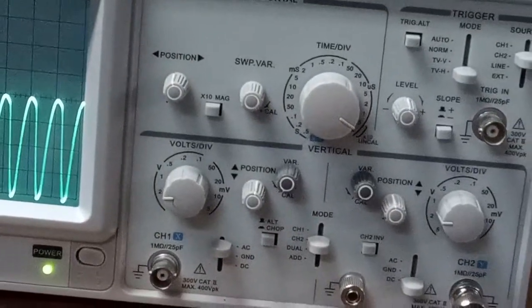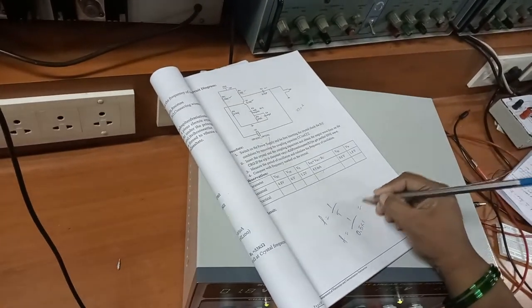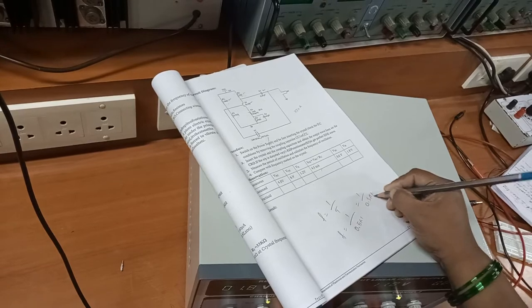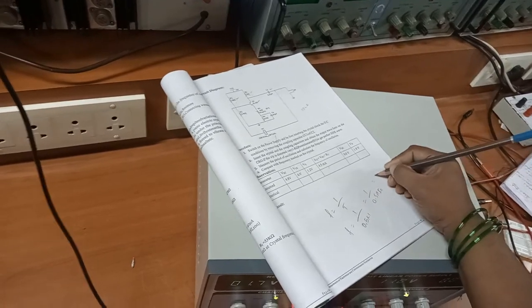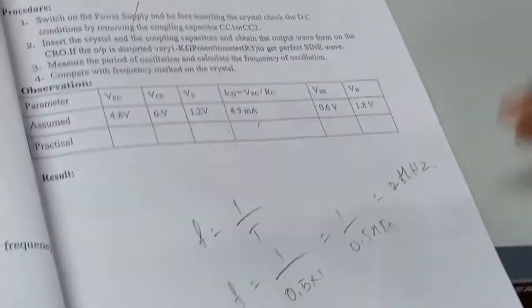Calculate f equals 1 over t. f equals 1 divided by 0.5 into 1, that is 0.5 microseconds. That gives you 2 megahertz. This is how you generate an oscillator.